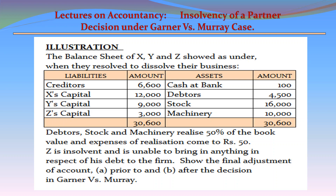Now coming to the problem. The balance sheet of X, Y, and Z showed as under when they resolved to dissolve their business. Liabilities: creditors 6,600; X's capital 12,000; Y's capital 9,000; Z's capital 3,000; total liabilities 30,600. Assets: cash at bank 100; debtors 4,500; stock 16,000; machinery 10,000; total assets 30,600.